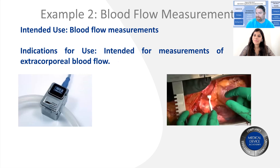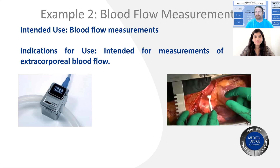Here are a couple more samples. Similar to what we showed on the first slide, blood flow measurements — on the left-hand side, the example of an extracorporeal measurement. If this were a hemodialysis system, you'd be measuring blood flow through tubing, so it's non-invasive and non-sterile, but still measuring blood flow. Whereas the example on the right is someone measuring blood flow invasively during heart surgery on a blood vessel rather than through tubing, and it's sterile. Very different indication for use. The intended use is blood flow, but the indication for use is much more specific.